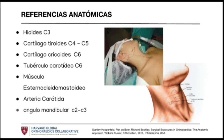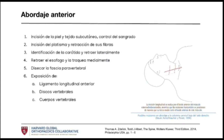There are important anatomical references such as the hyoid at the level of C3, the thyroid between C4 and C5, the cricoid at C6, the carotid tubercles, and the longus colli muscle at the sternocleidomastoid. From there towards the midline, we have the main anatomical references: the blood vessels, the carotid artery, and jugular veins. Here we see in the model the skin incision for a single-level approach, such as C4-C5 or C5-C6.